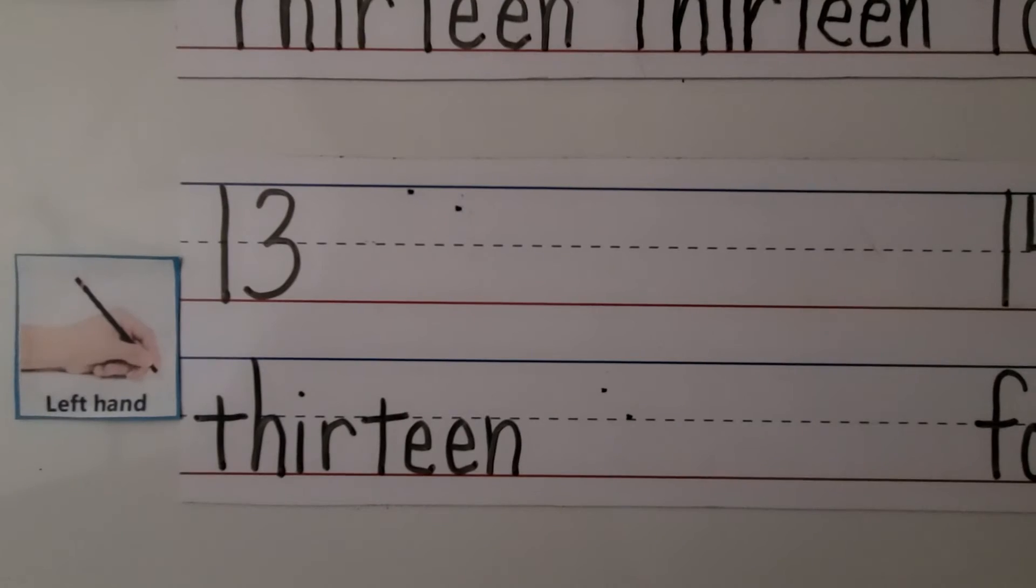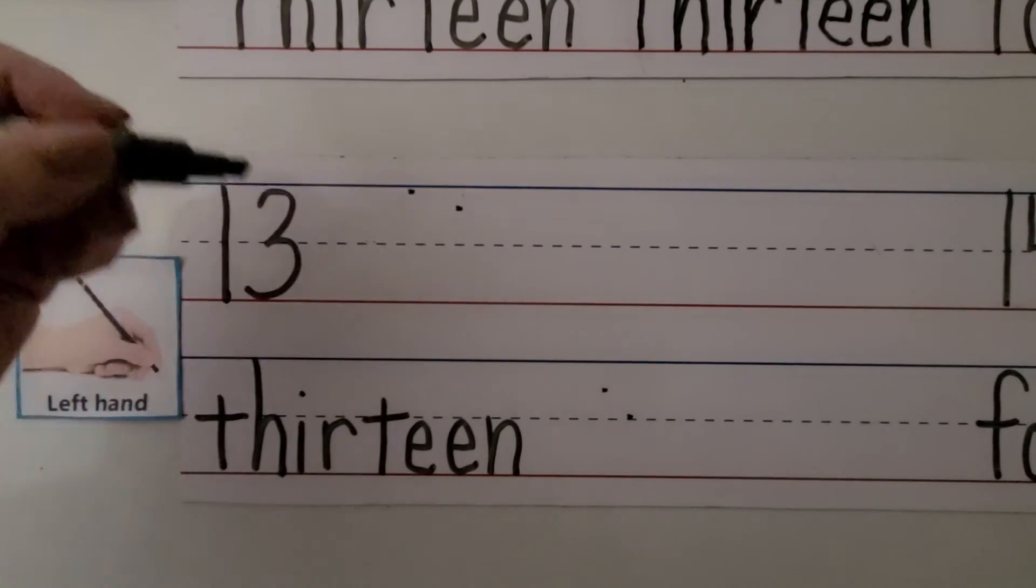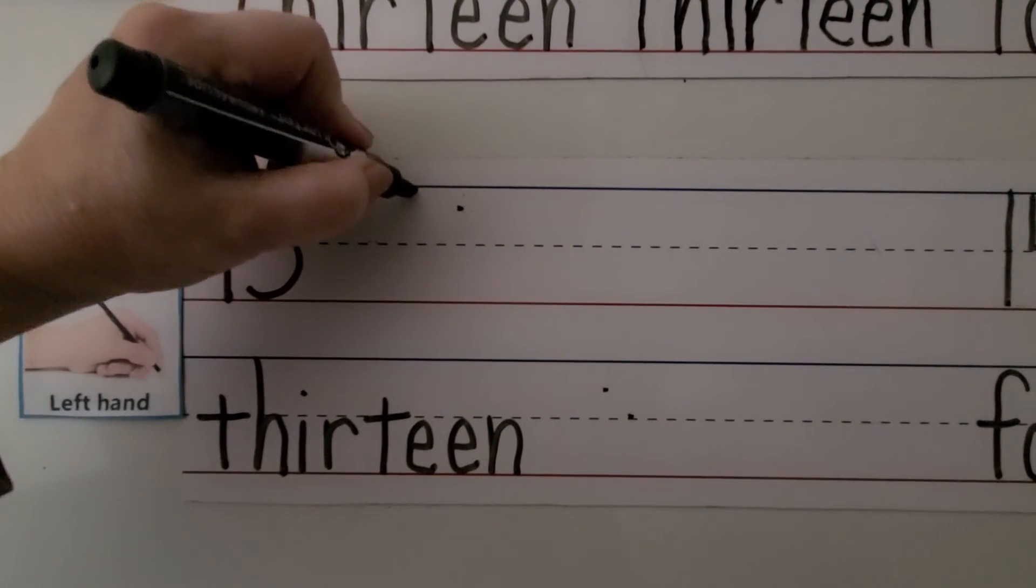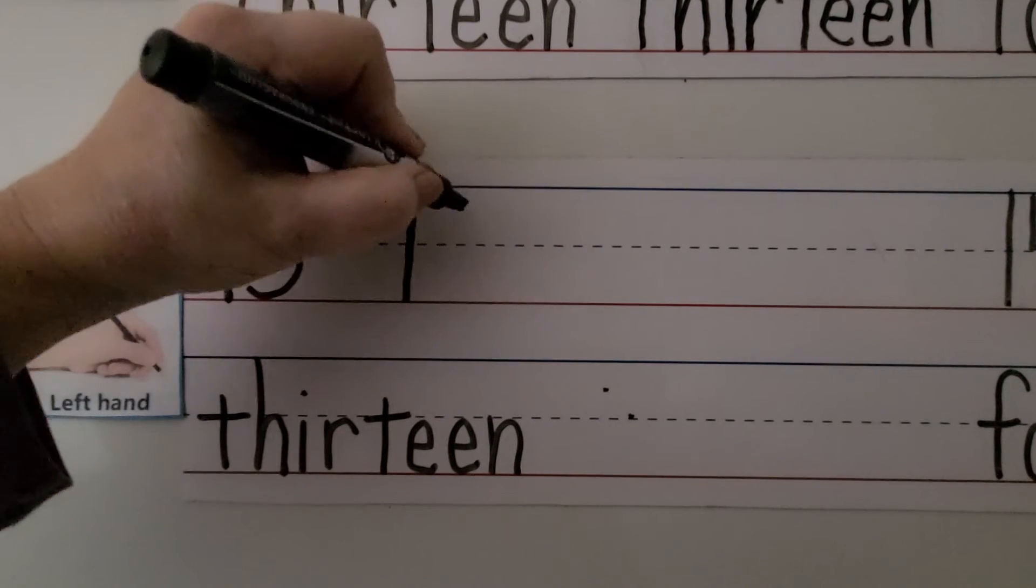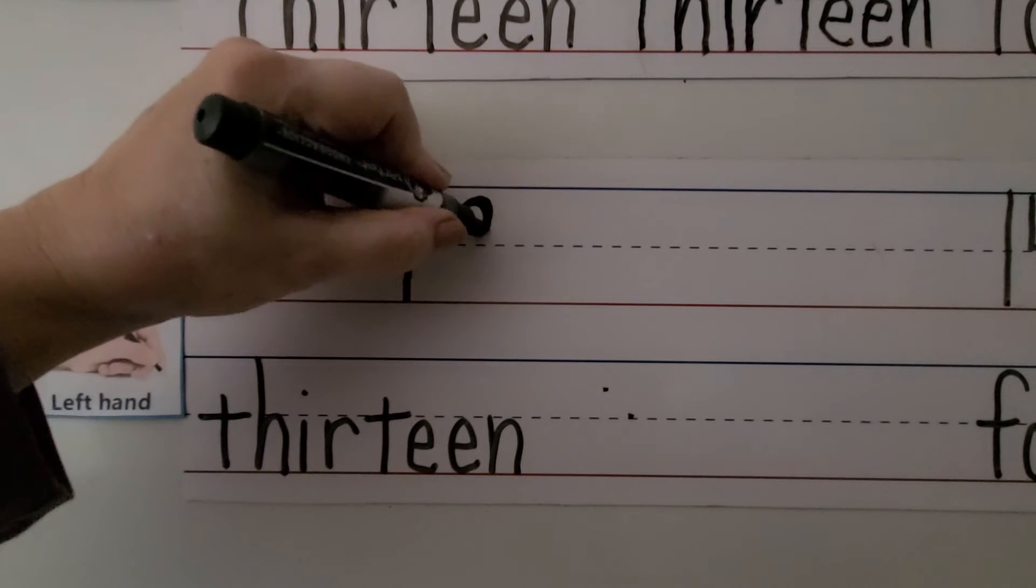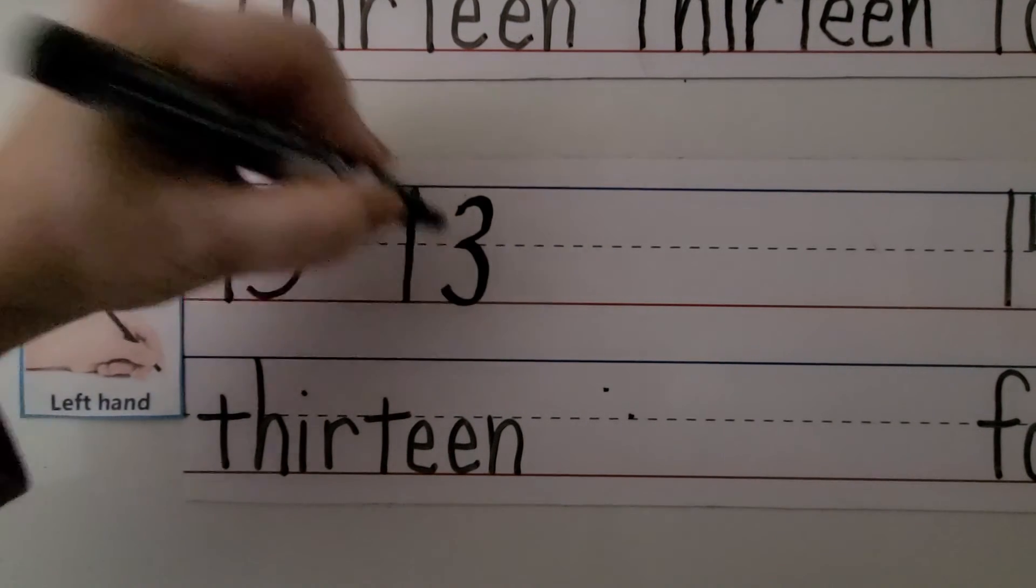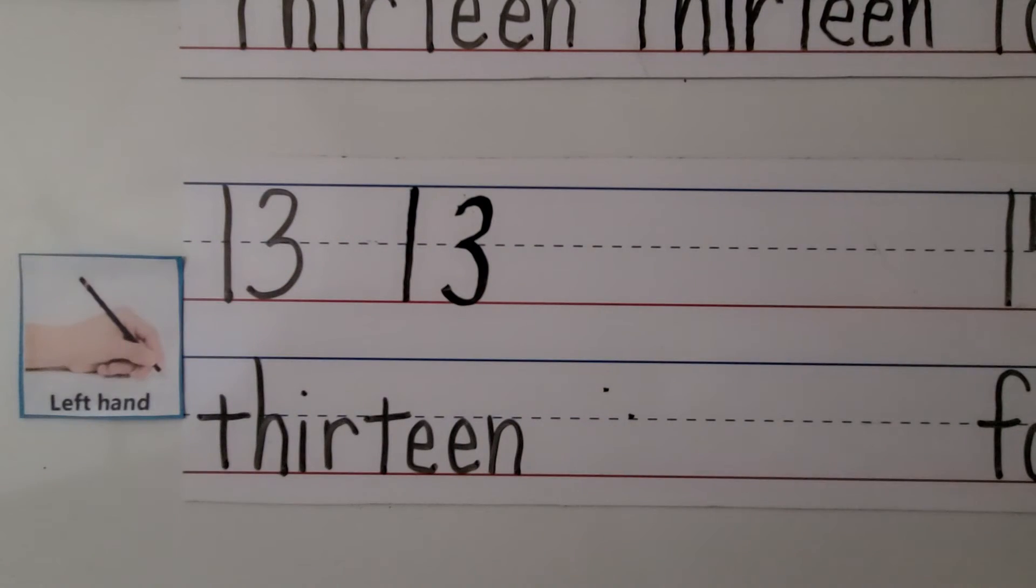We can write 13 with our left hand. We make a 1 by starting here and coming down. We make our 3 next to it. The 1 and 3 next to each other is the number 13.